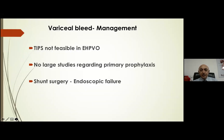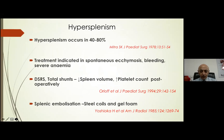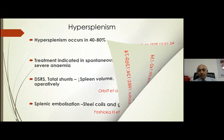Variceal bleeding in patients with NCPF is managed in exactly the same way as in cirrhosis of the liver, except that TIPS cannot be done because there is no portal vein which can be connected to the hepatic veins. Hence shunt surgery may be an answer in patients with failure of endotherapy. Hypersplenism occurs in about 48% of patients and is more common in those with larger spleen, and may be one of the reasons patients have to undergo surgery.